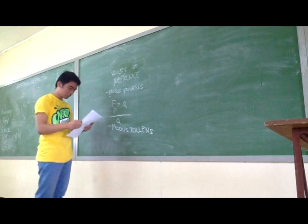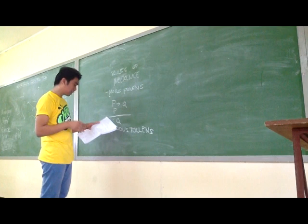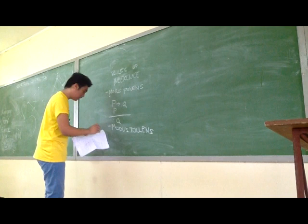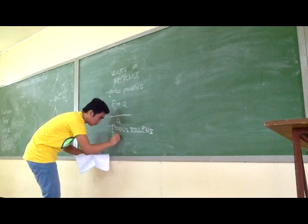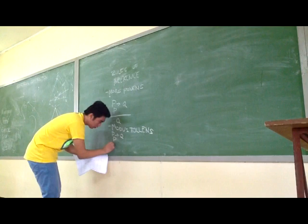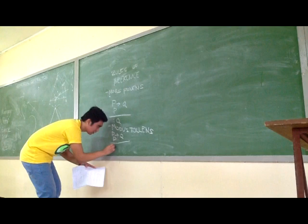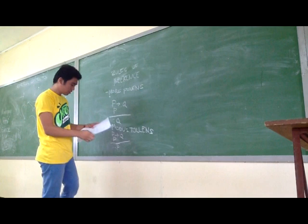Modus Tollens is the opposite of Modus Ponens. Why? Because as stated here: P implies Q. Therefore, it is not Q, therefore it is not P.